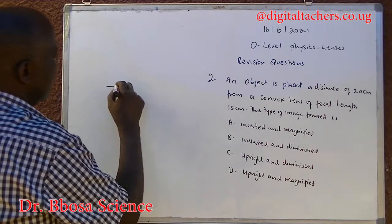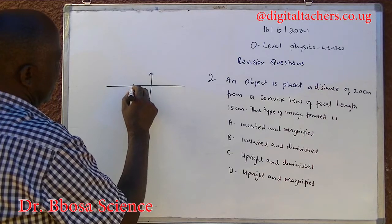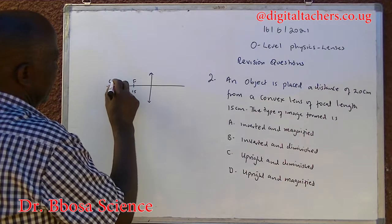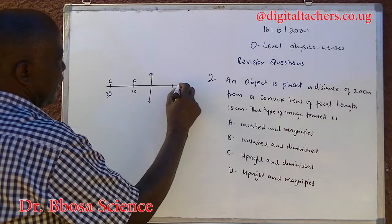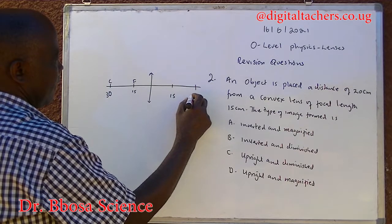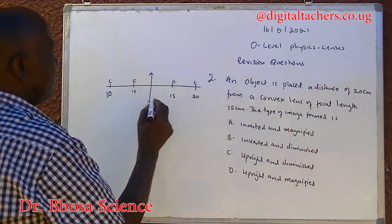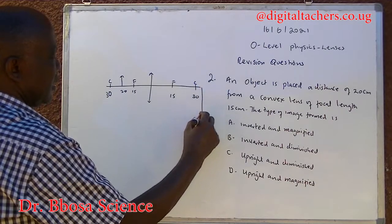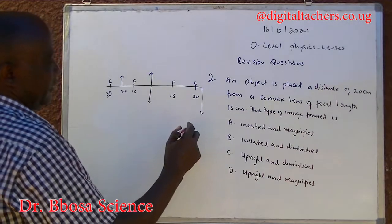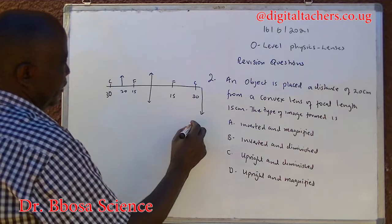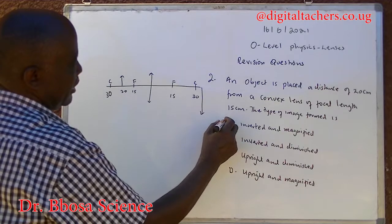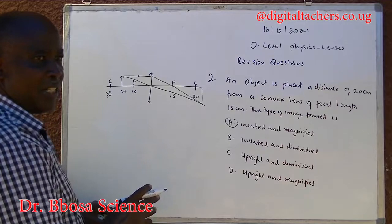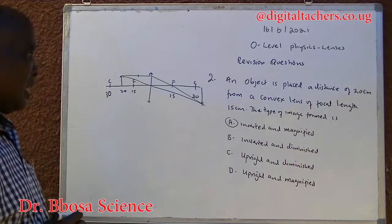When you look at the diagram, F is 15 and 2F is 30. An object placed between F and 2F — which is 20 here — will be inverted and formed beyond 2F, inverted, magnified and formed beyond 2F. So the right answer is A. A ray parallel to the principal axis is refracted through the principal focus. A ray through the optical center passes undiverted, so the image formed is inverted and magnified.